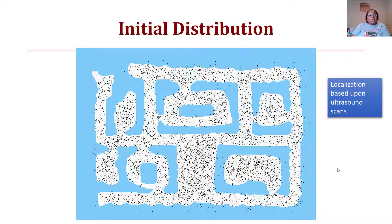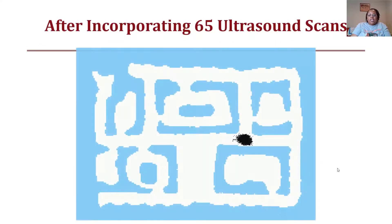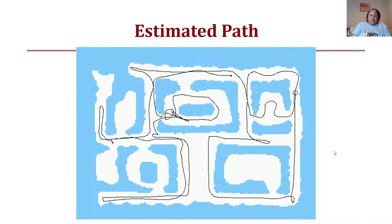Another example uses ultrasound scans. It starts with a uniform distribution. After 10 ultrasound scans, clustering begins based on importance weighting. After 65 ultrasound scans, the robot is most likely at one location and all other clusters have disappeared. The figure shows the path the robot took, the start location, the robot driving around, and then converging to the localized position.